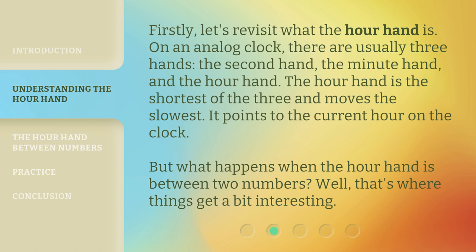The hour hand is the shortest of the three and moves the slowest. It points to the current hour on the clock. But what happens when the hour hand is between two numbers? Well, that's where things get a bit interesting.